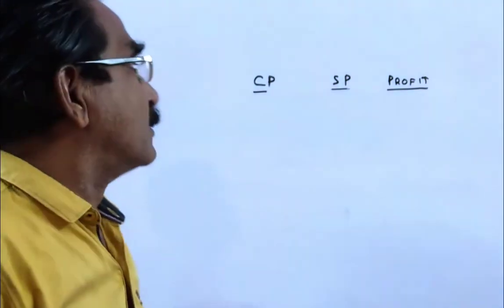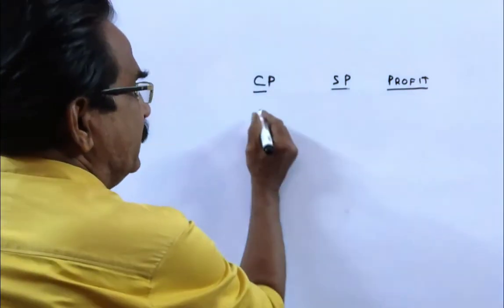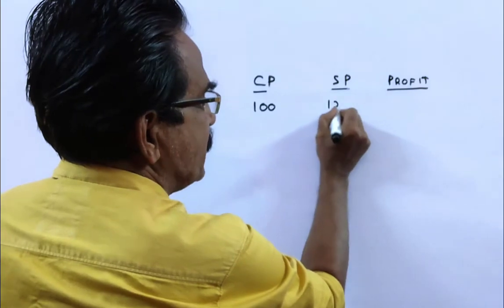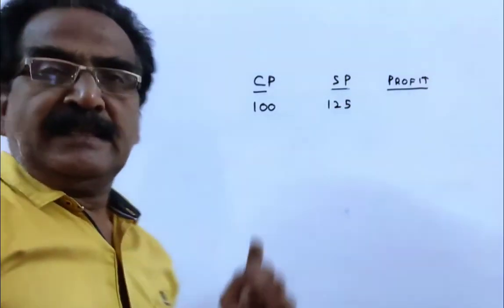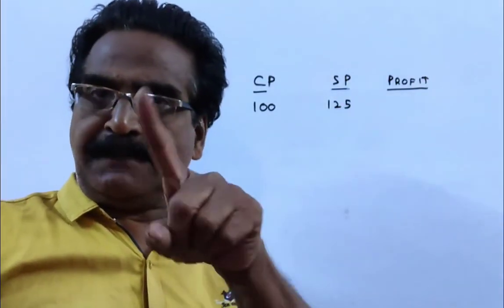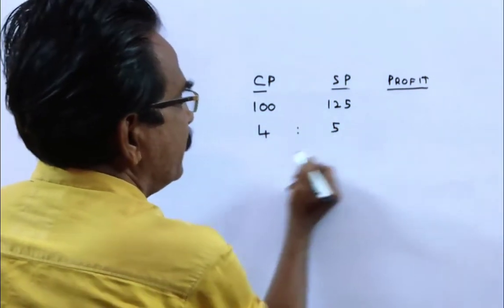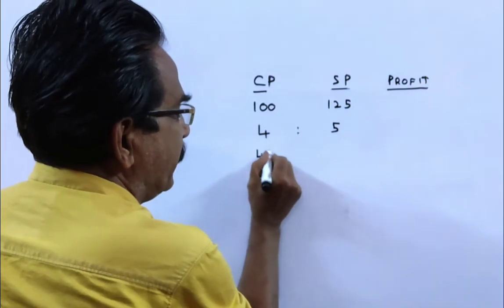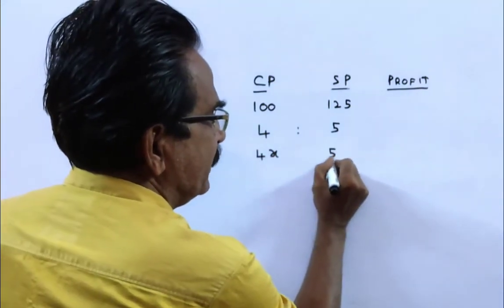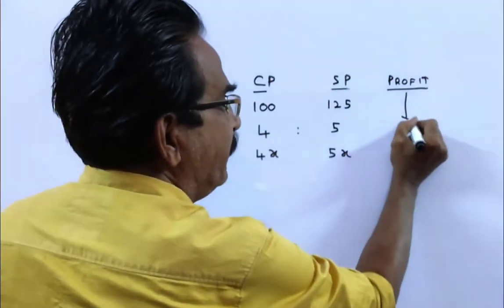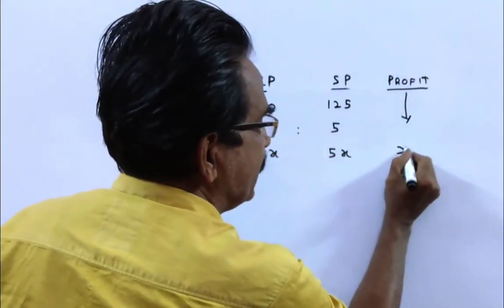Friends, the problem is given in the description box. See friends, a man sells his goods at 25% profit. That means if cost price is 100, the selling price is 125, then the cost price and selling price will be in the ratio 4 to 5. That is, if cost price is 4x, the selling price will be 5x and profit is 5x minus 4x, which equals x.